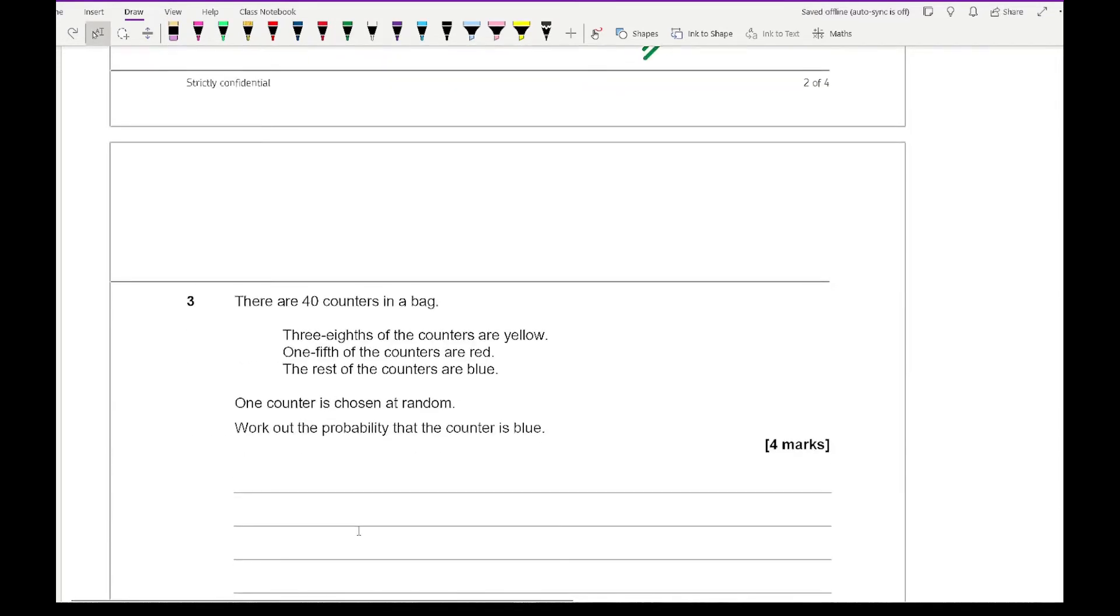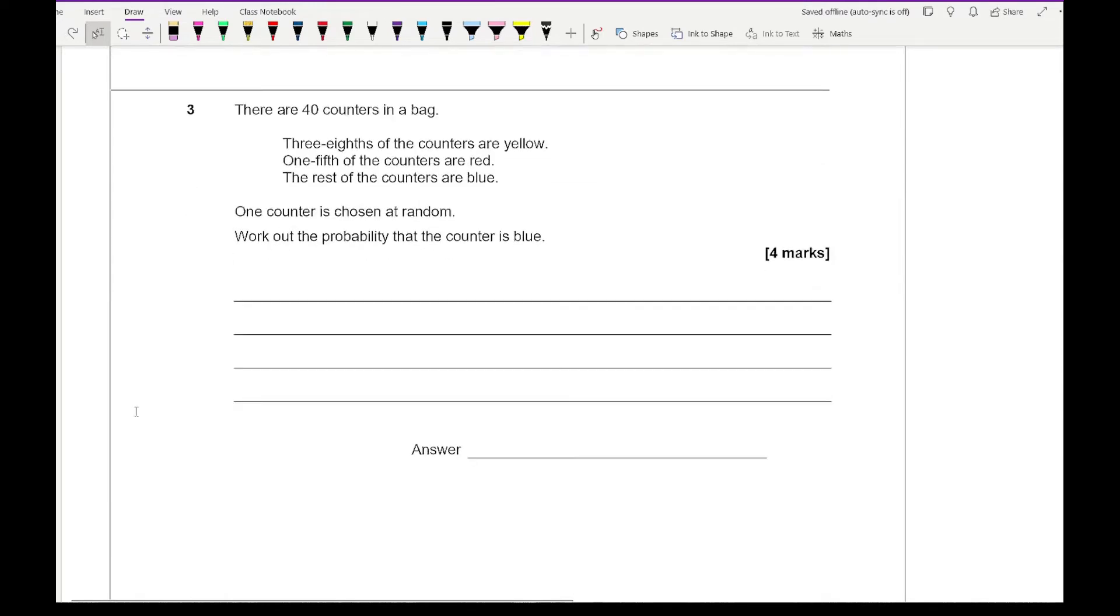Moving on to question 3. It says there are 40 counters in a bag. 3 eighths of the counters are yellow, one fifth of the counters is red, and the rest of the counters is blue. One counter is chosen at random. Work out the probability that the counter is blue. For this we need to incorporate fractions of amounts. Looking at the yellow counters we've got 3 eighths, so we want to work out 3 eighths of 40.